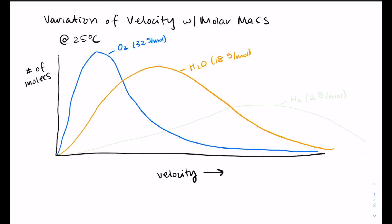Then H2, which is only two grams per mole, is much farther out. So we still have a range of velocities, but my peak has pushed up to a much higher velocity because my molar mass has gotten to be so small.